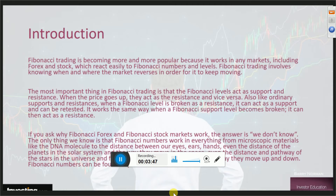If you ask why Fibonacci Forex and stock markets work, the answer is: we don't know. There is no scientific reason why these levels work. We just know they do. Fibonacci numbers work in everything from microscopic materials like DNA molecules to the distance between our eyes, ears, and hands, even the distance between planets in our solar system, the pathways of stars in the universe, and finally in currency prices and the way they move up and down.